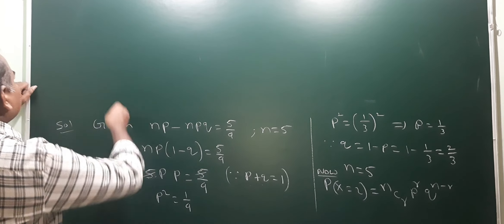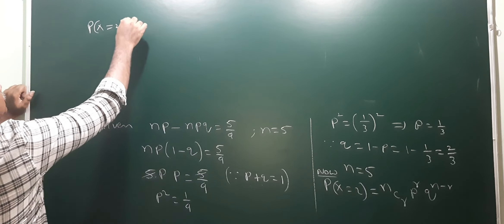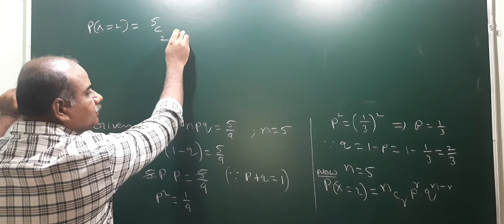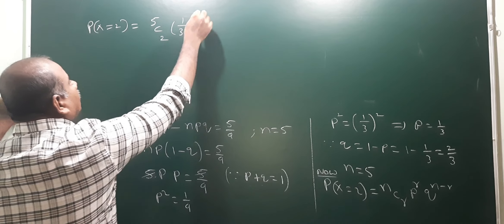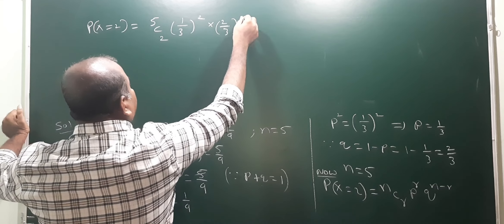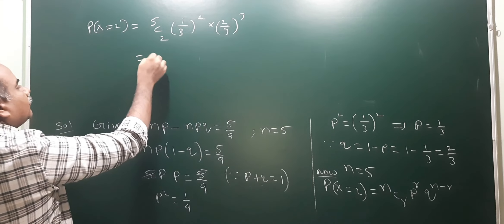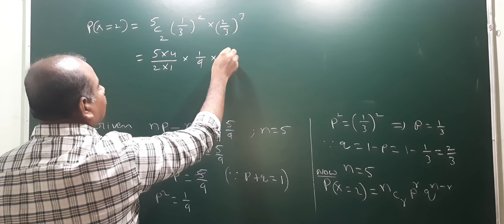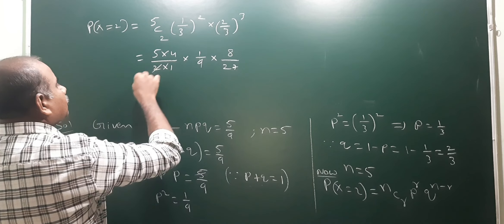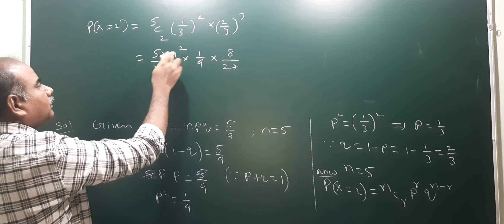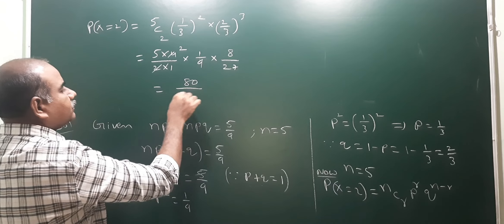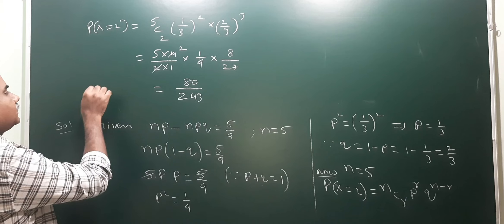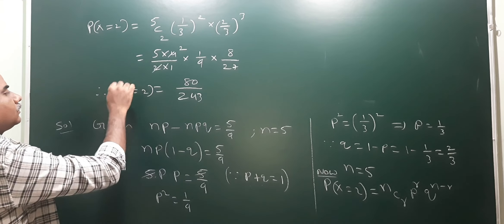Therefore, P(X=2) equals 5C2 times (1/3) squared times (2/3) cubed. That is 10 times (1/9) times (8/27), which equals 80/243. So the probability for the event of two successes is 80/243. That is the answer.